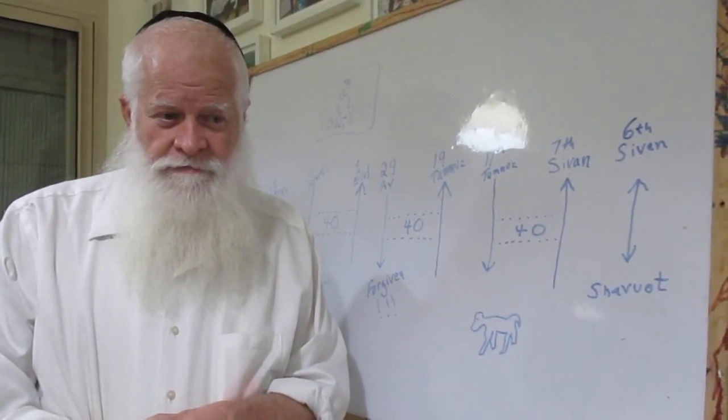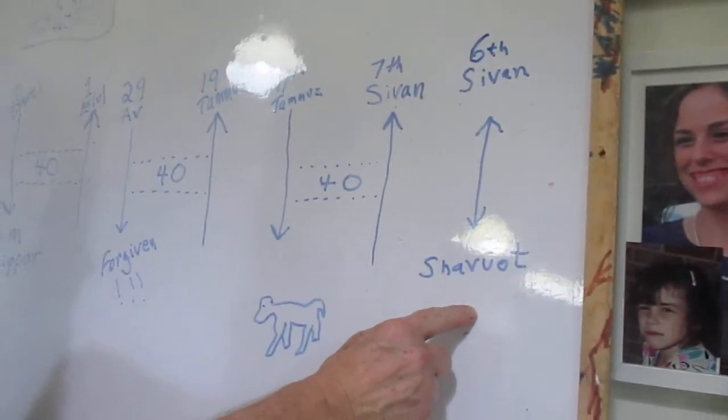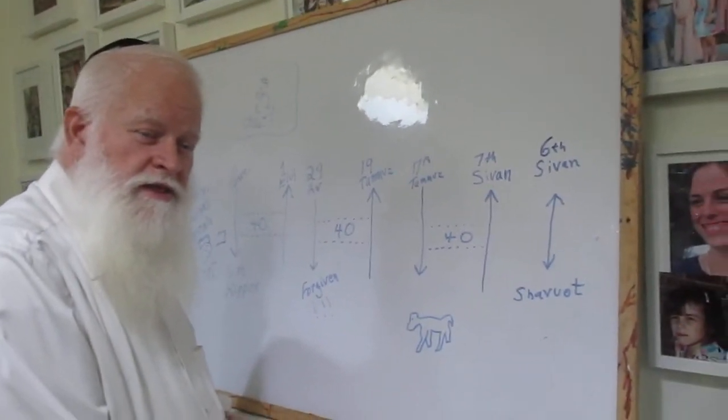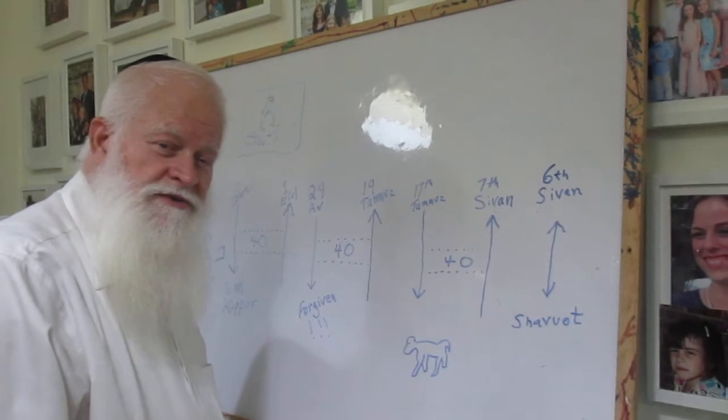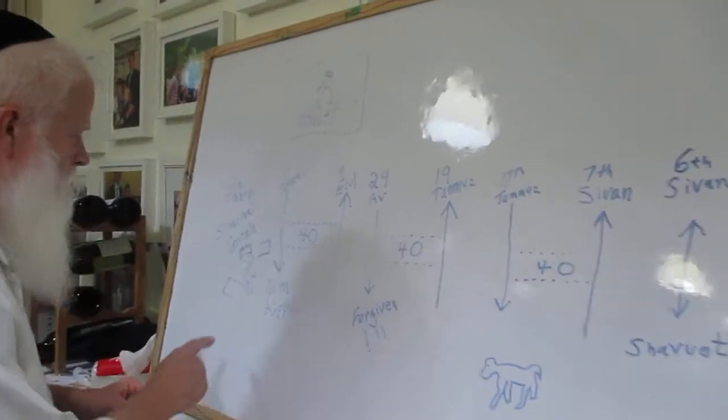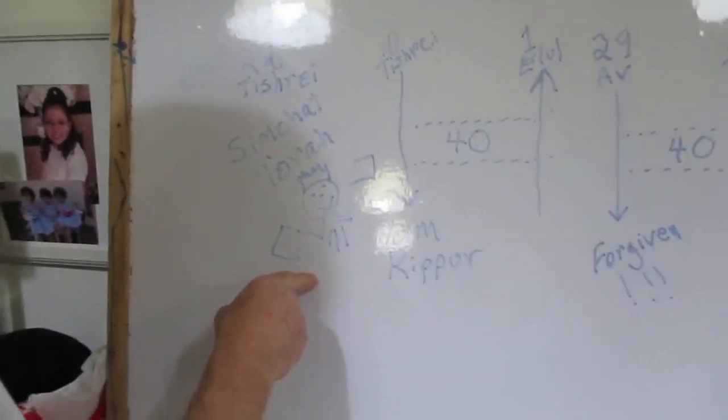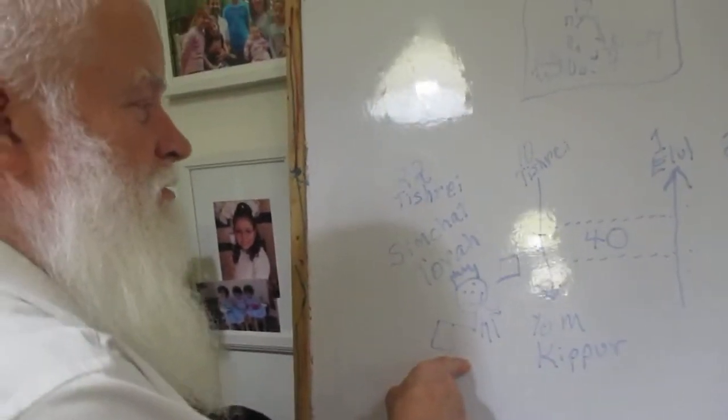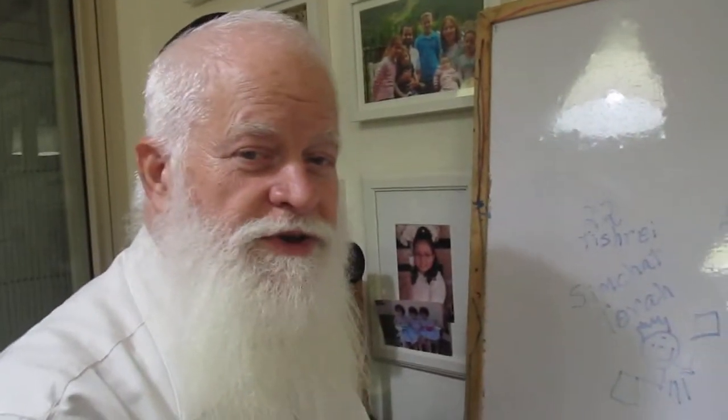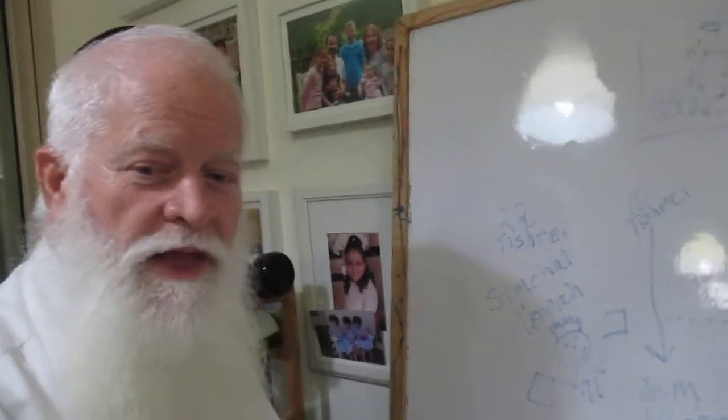I'll give you some choices. Did we receive the Torah on Shavuos? That's 49 days of counting the Omer, and then on the 50th we celebrate receiving the Torah. Or is it Simchat Torah, the last day of Sukkos, when we dance around and celebrate receiving the Torah? The answer to both of those is sort of yes and no. I'll go through it step by step.